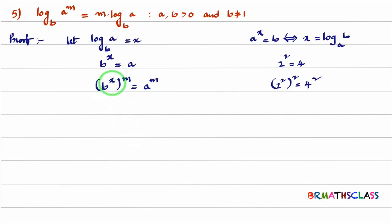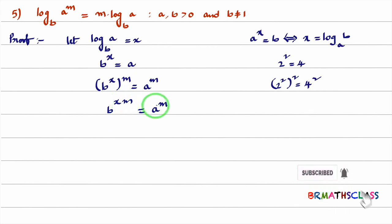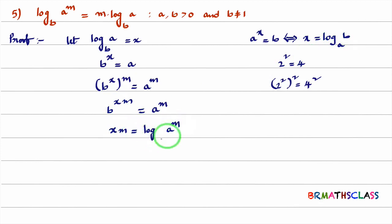This is of the form a^m whole power n, so b^(xm) = a^m. You observe this — it is of the form a^x = b. Whenever you see a^x = b, you can write x = log(b) base a. So here, you can write that xm = logarithm of a^m base b.